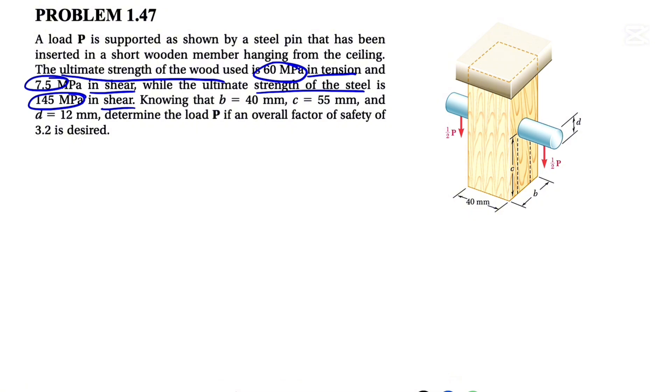So we have all the information about all these dimensions, and at the end of this we need to determine the load P with an overall factor of safety of 3.2.